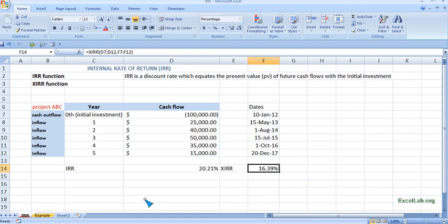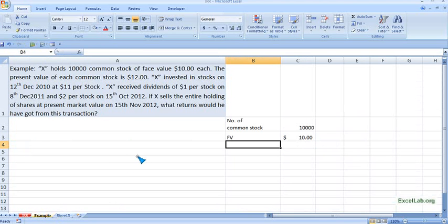Now we will see another illustration. So here it is. A person X invested in 1,000 common stock at $11 on 12th December 2010.